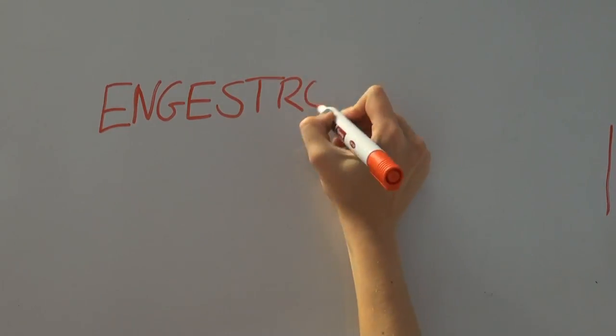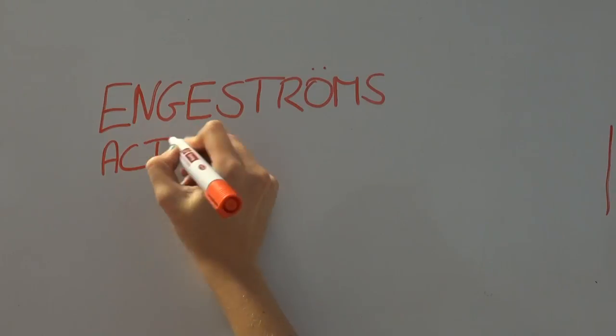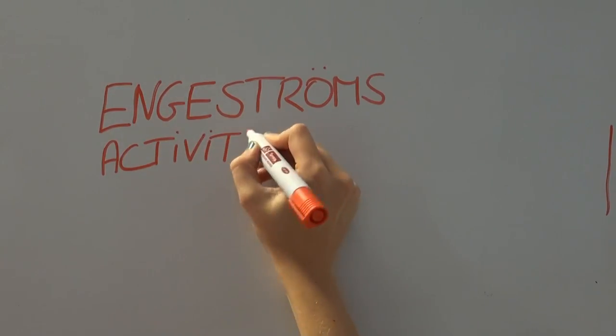Angestrom's theory of expansive learning is based on the cultural historical activity theory. In this video, we will explain the activity theory and the concepts which constitute it.